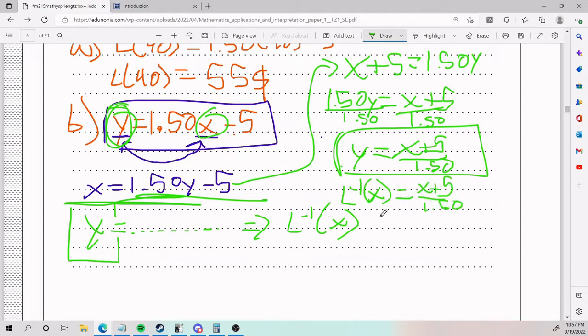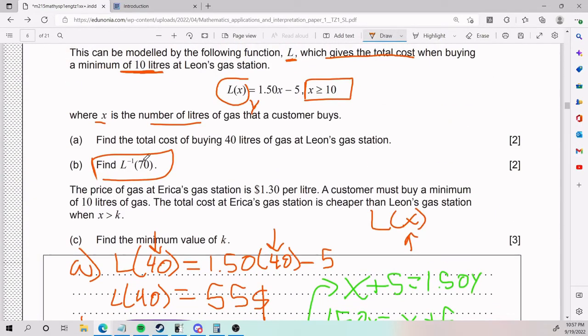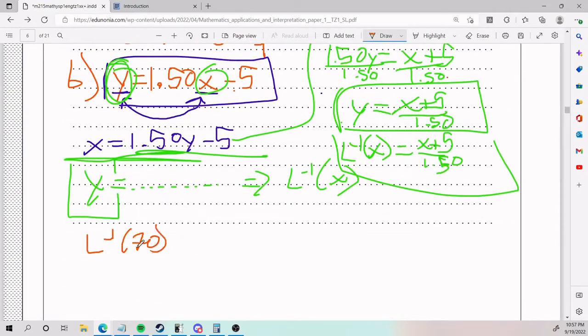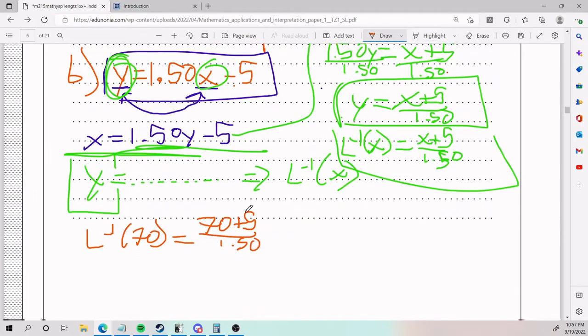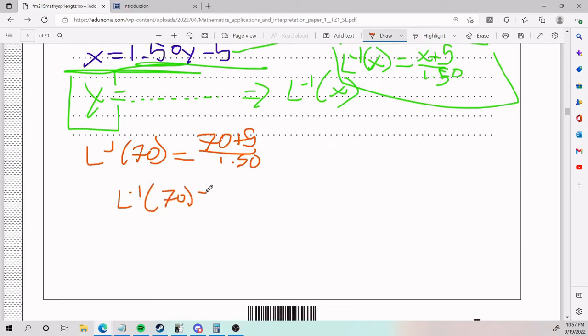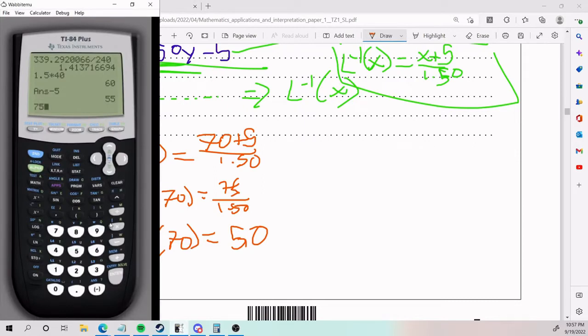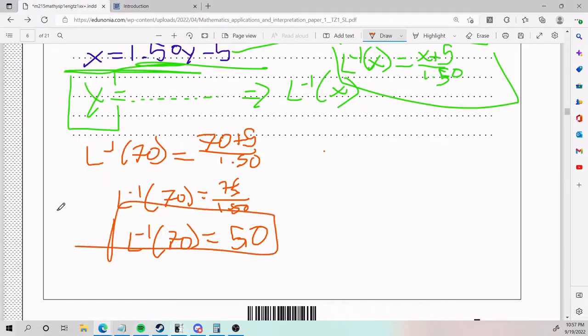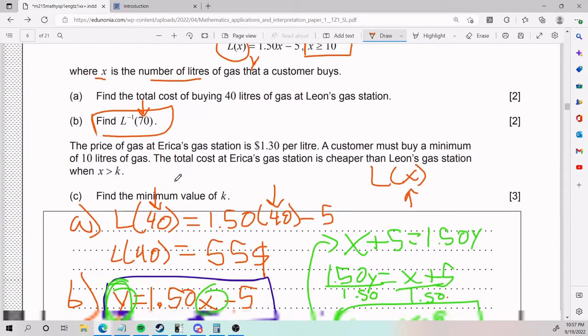So if you want to be like mega mathy about it, you would pretty much write it like that. Now I'm not done yet because the question is asking for plugging 70 to this. So I'm going to go ahead, plug in 70 to that. We end up with (70 plus 5) divided by 1.50. This gives me 75 divided by 1.50. This is going to be 50. I did this a while ago. Let me just double check. Yeah, that's 50. So that's part B.